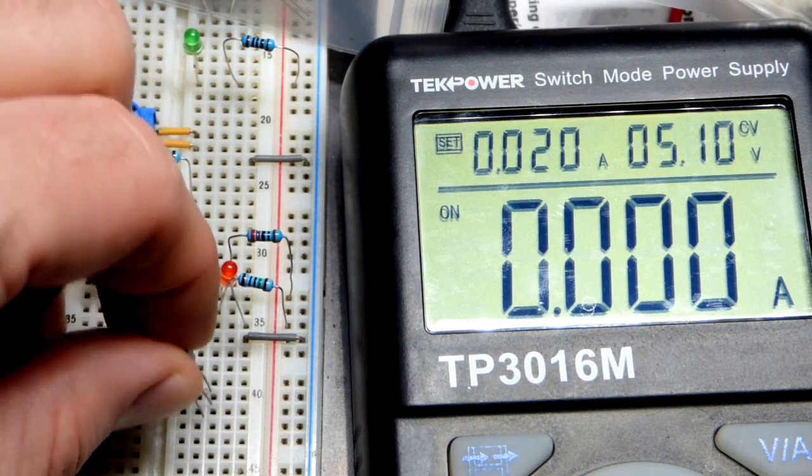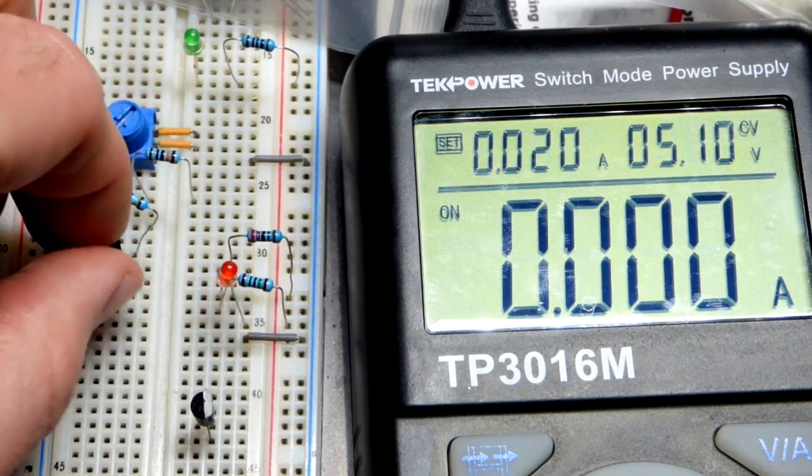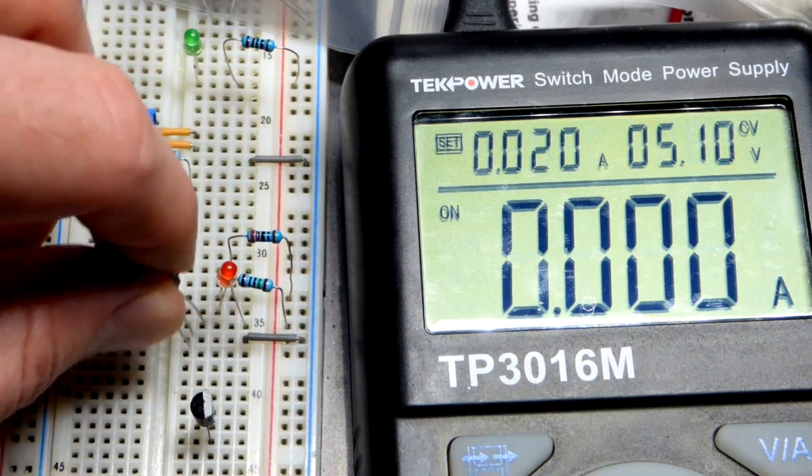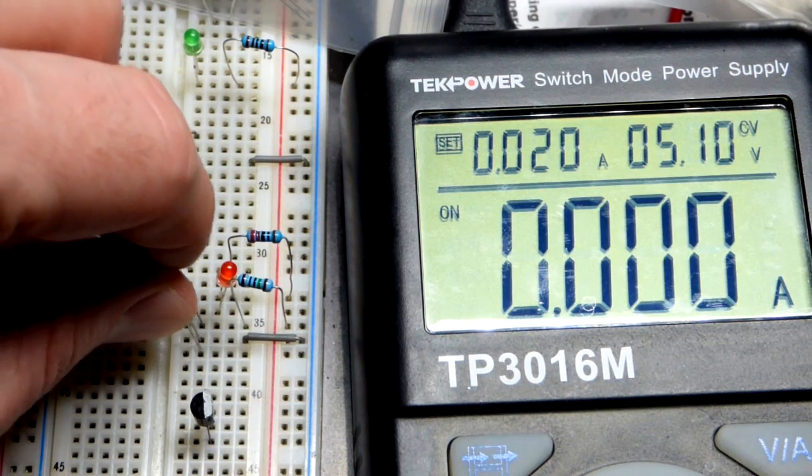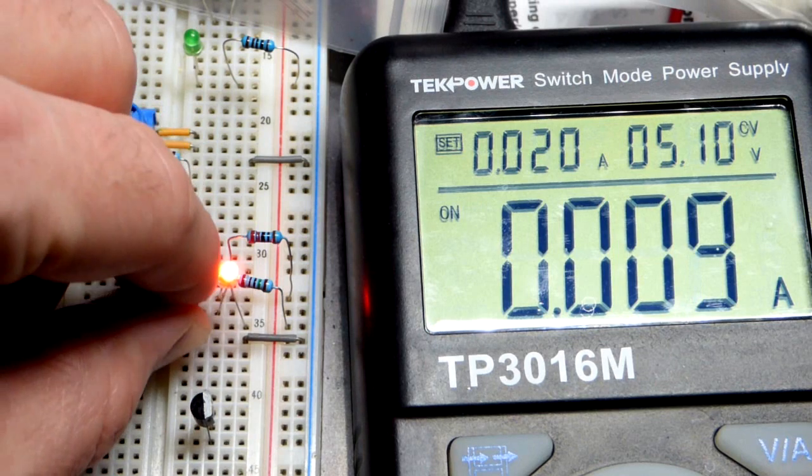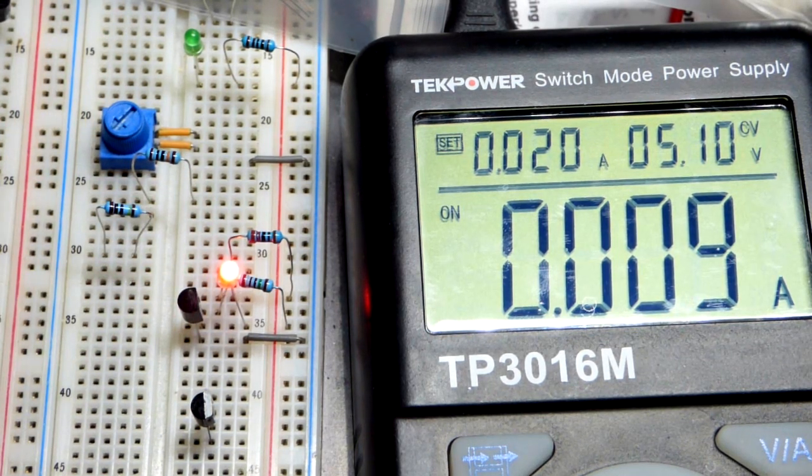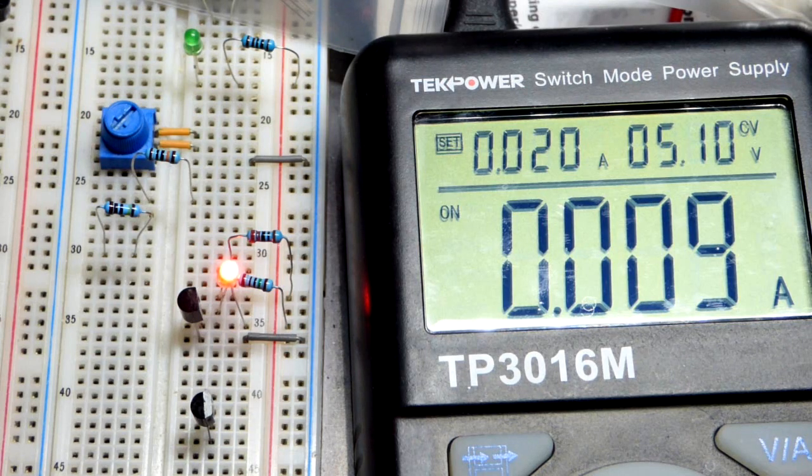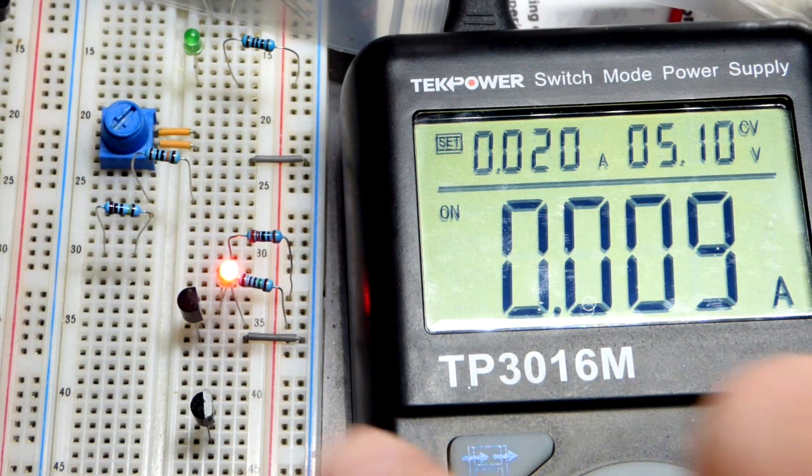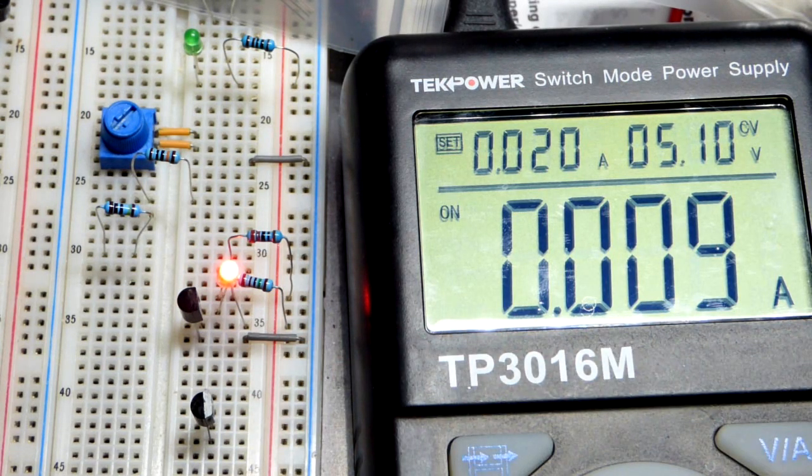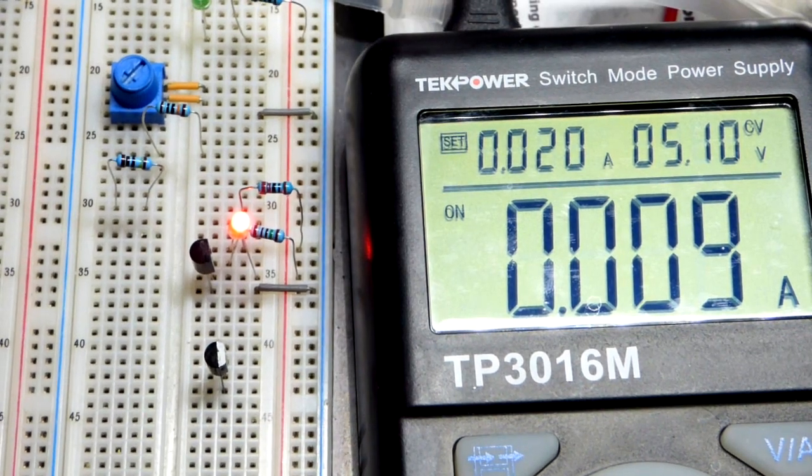Whereas, the Darlington pair transistor, as we saw, even with that small amount of base current, it amplifies that current and gives you pretty much the full current there. We could test this more accurately with the multimeter and what not. But this is good enough as far as I'm concerned right now.